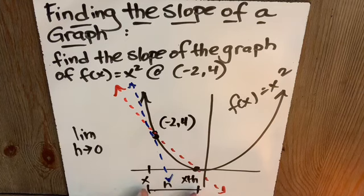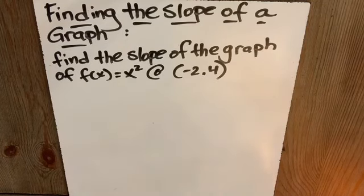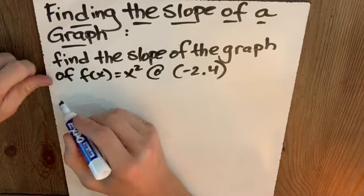That's why we're taking the limit as h, this distance here, goes to zero. So instead of approximating the slope of that tangent line, let's find it using the difference quotient.